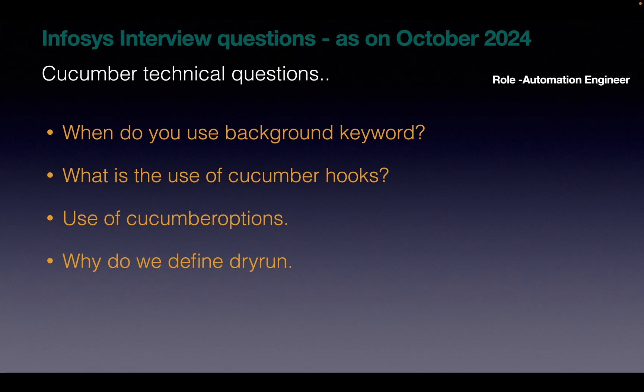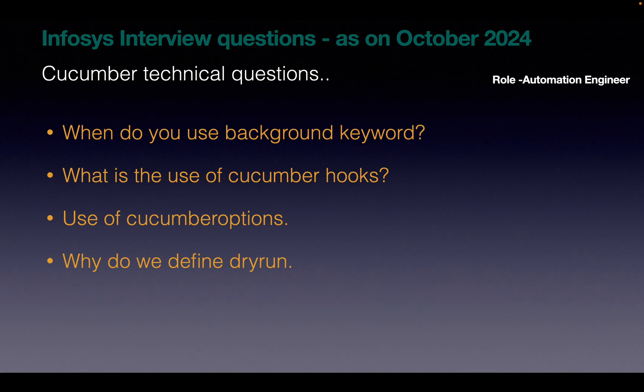The next question: what is the use of Cucumber hooks? Hooks are blocks of code. We use annotations like @Before or @After to define hooks. If you need some code to run before the test and after the test, we use Cucumber hooks. The next question: what is the use of Cucumber options? Cucumber options are seen in the test runner class and are used to specify configurations to the test runner — for example, you can include or exclude certain scenarios using Cucumber options.